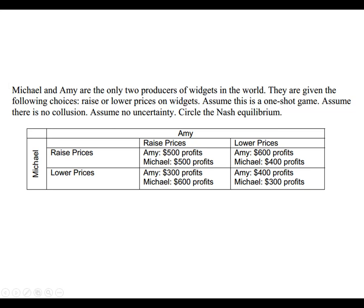Michael and Amy are the only two producers of widgets in the world, given the choices to raise or lower their prices. If Amy raises her prices, Michael can make $500 by raising his or $600 by lowering his — so he lowers his price. But if Amy lowers her prices, it's better for Michael to raise his price. So Michael does not have a dominant strategy — he's going to do two different things depending on what Amy does.